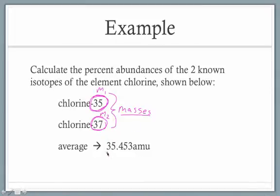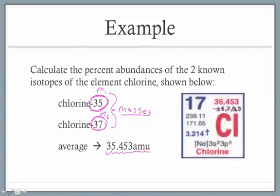We're also told that the average atomic mass is 35.453 atomic mass units. This information is actually straight from our periodic table, and we see right here we have that 35.453 amu. If this average is not given to you, you should definitely know that you should be able to find the same exact information right off of your periodic table.